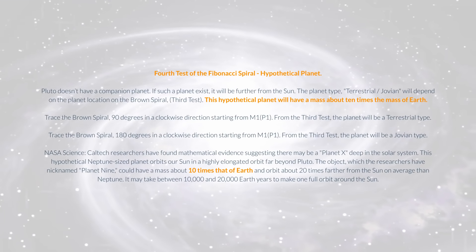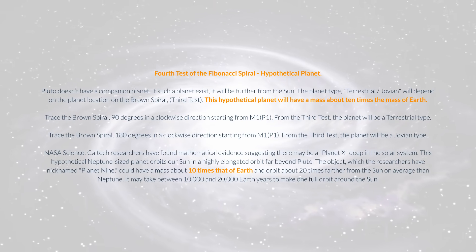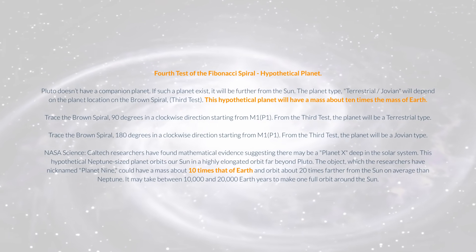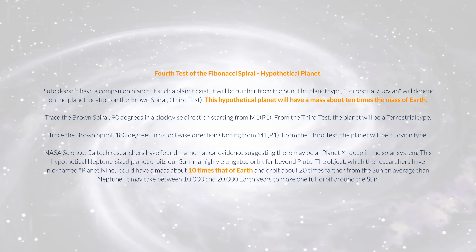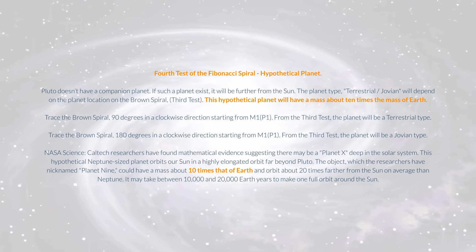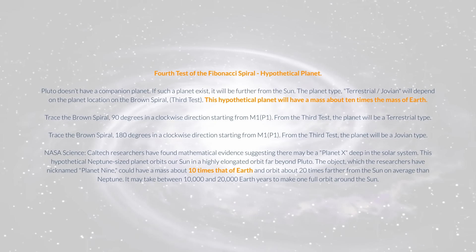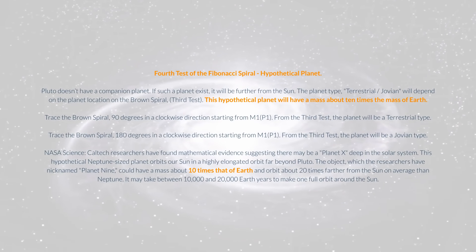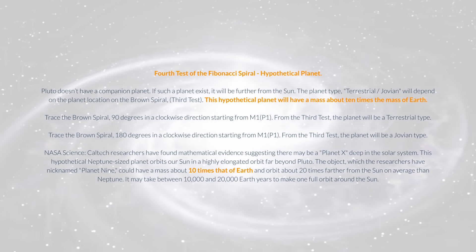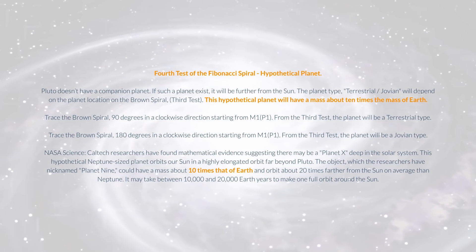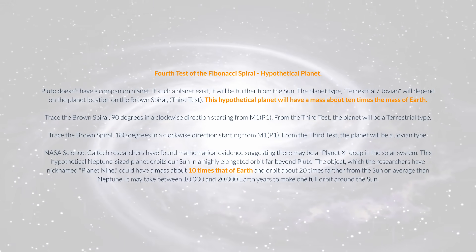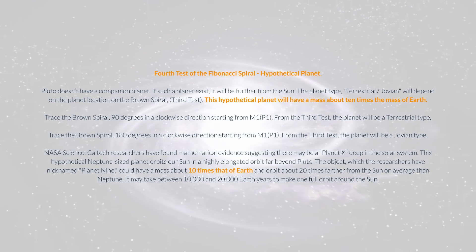Fourth test of the Fibonacci spiral: hypothetical planet. Pluto doesn't have a companion planet. If such a planet exists, it will be further from the Sun. The planet type, terrestrial or Jovian, will depend on the planet location on the brown spiral, third test. This hypothetical planet will have a mass about 10 times the mass of Earth. Trace the brown spiral 90 degrees in a clockwise direction starting from M1 P1. From the third test, the planet will be a terrestrial type. Trace the brown spiral 180 degrees in a clockwise direction starting from M1 P1. From the third test, the planet will be a Jovian type.